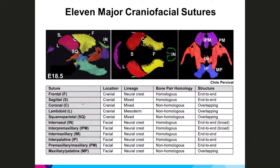Variation factors include their location — whether they're cranial, at the top of the head, or facial such as palatal sutures — their lineage, whether from neural crest or mesoderm or a mixed lineage, the specific bone identity, and the bone structure — whether the osteogenic fronts meet end to end narrowly, end to end broadly, or are overlapping.